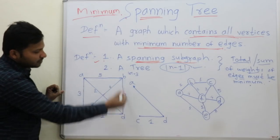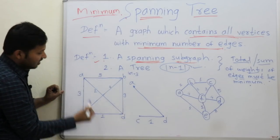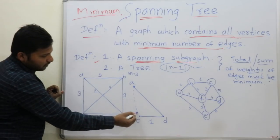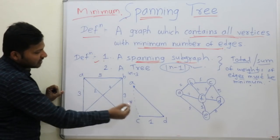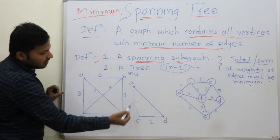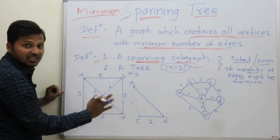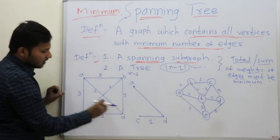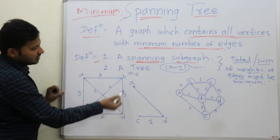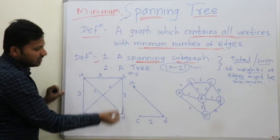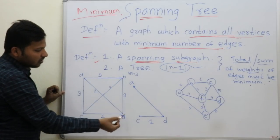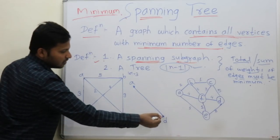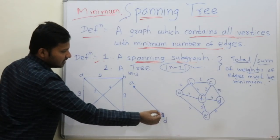Check which edge forms a cycle. See A-C — if you connect A-C its weight is 3, but that is not allowed because it forms a cycle. So check for another edge: B-D also has weight 3, so join that edge.